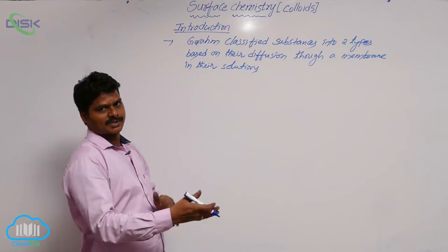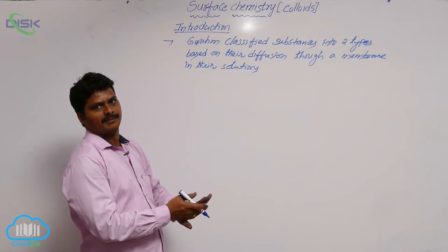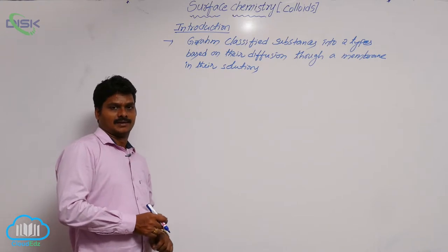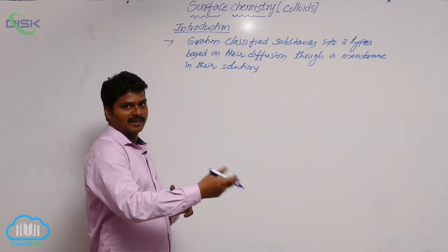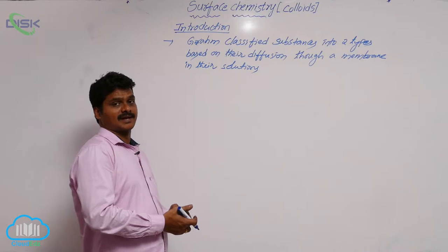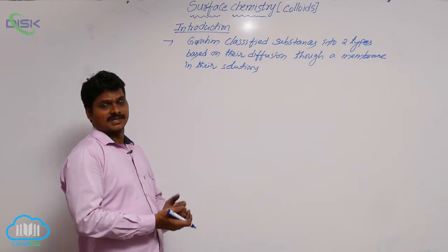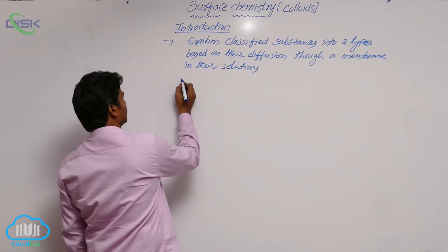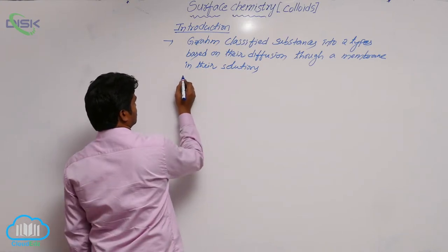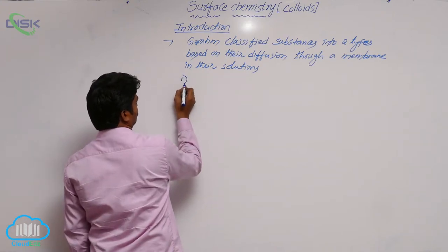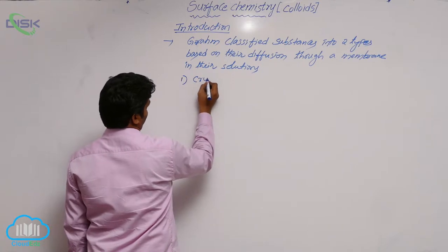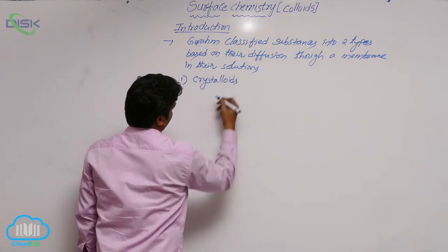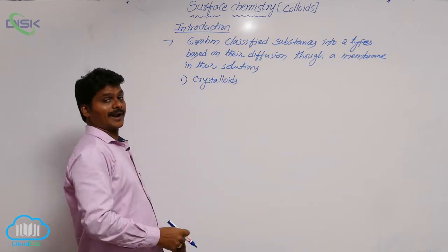When a substance in solution is passed through the membrane, some substances can pass through the membrane, but some substances cannot pass through the membrane. So in that way he classified substances into two types: one are crystalloids, and the other type are colloids.